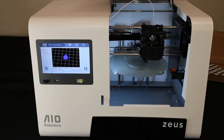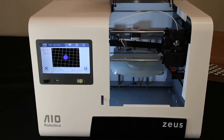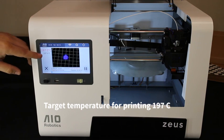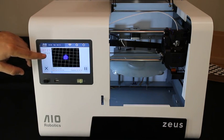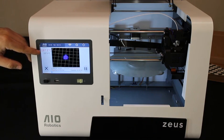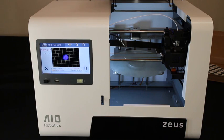Now the auto-probing is finished and the extruder head needs to heat up. As you can see here in the screen, the target temperature for printing is 197 Celsius.